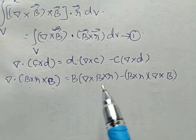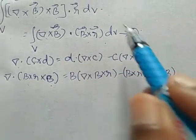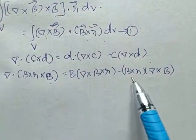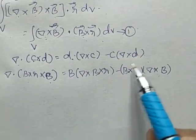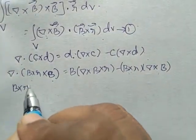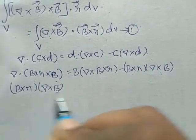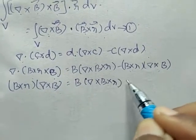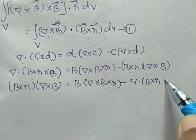In equation 1 we have del × B · B × R; since A · B equals B · A, to get this value we shift to the LHS and we will have B × R · del × B equals B · del × (B × R) minus del · (B × R) × B. This is equation 2.